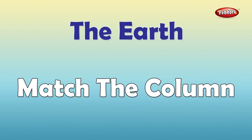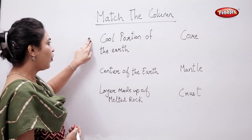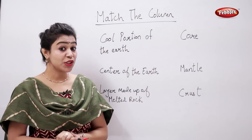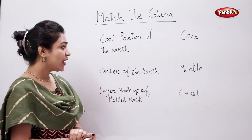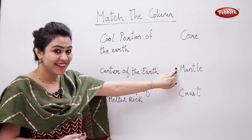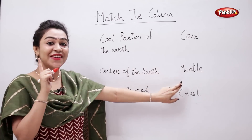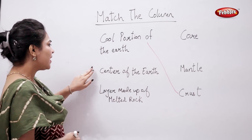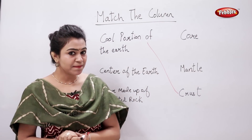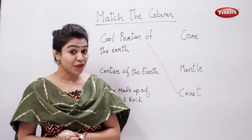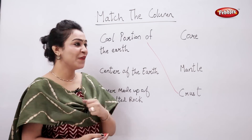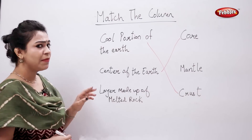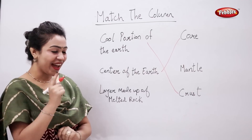Match the column. Cool portion of the earth — now tell me, which is the cool portion of the earth? Is that mantle? No, it's crust. Center of the earth? Core. Layer made up of melted rock — that's mantle.